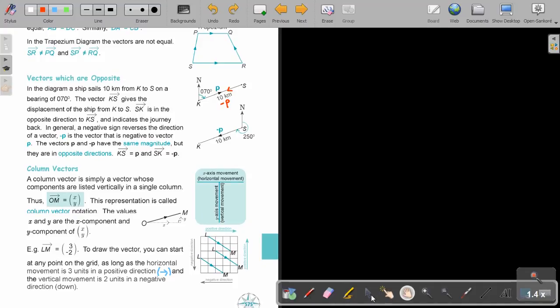Column vectors. A column vector is simply a vector whose components are listed as vertical in a single column. So in terms of matrices, it will always be a two by one. Two rows by one. So OM. There is OM. This is the horizontal movement, which is X, and this is the vertical movement, which is Y. And we always remember it by the letter T. Always the horizontal on top and the vertical at the bottom. Horizontal, vertical. This representation is called a column vector notation. The values of X and Y are the X component and the Y component of XY. So always remember, horizontal on top, vertical at the bottom.